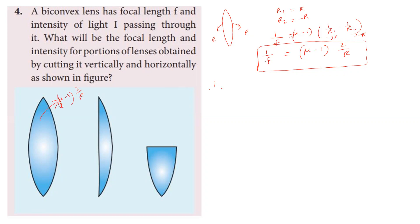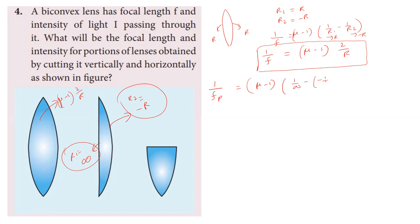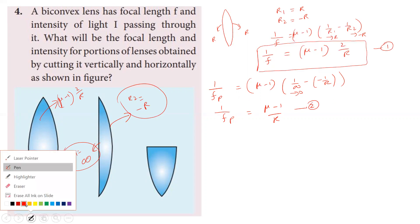Now, for the plane convex lens obtained by vertical cutting: R1 is infinity and R2 is minus R. Using the lens formula: 1 by fp equals mu minus 1, into 1 by infinity minus 1 by R. Since 1 by infinity is 0, this gives 1 by fp equals mu minus 1 into 1 by R. Dividing equation 1 by equation 2 to compare focal lengths.